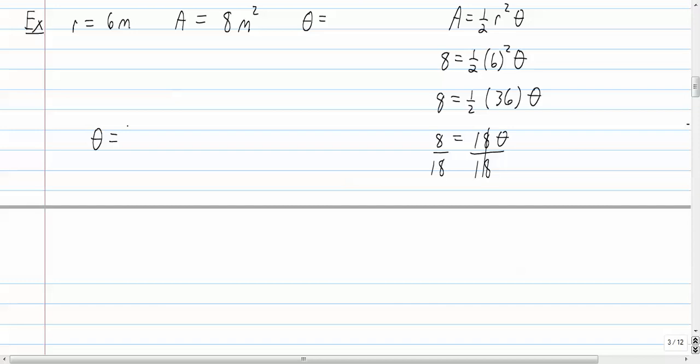It would depend on what the directions said. If the directions say round to two decimal places, or round to three decimal places, then you'd want to divide and leave it as a decimal. And your directions here on this particular problem do say round to three decimal places.